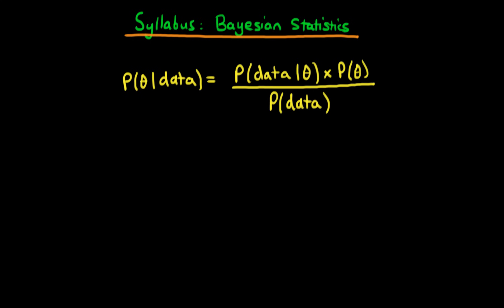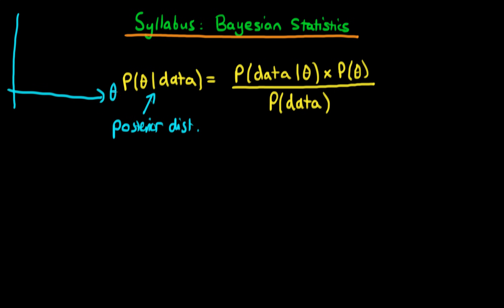So what do the elements of this Bayesian formula mean? Well, the goal of any sort of Bayesian inference process in general is to derive what we call the posterior distribution. What we're trying to do is assign a probability density value to all the different values of theta, so what we'll get out in the end is a value of the PDF for all different values of theta.